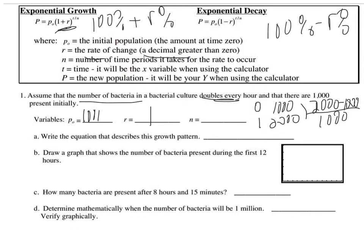Our initial value is a thousand, and it doubles every hour — the number of periods is one hour. So we write the equation: P(T) equals one thousand times — thinking about it, it's one plus my rate, so one plus one is two — raised to the T. So the equation is P(T) = 1000 · 2^T.